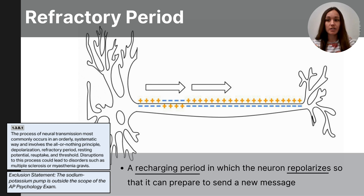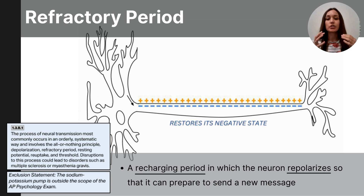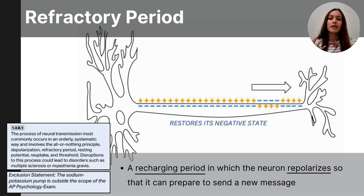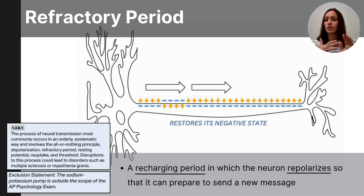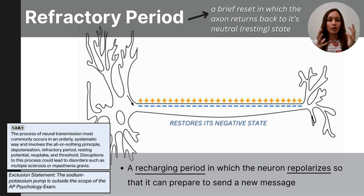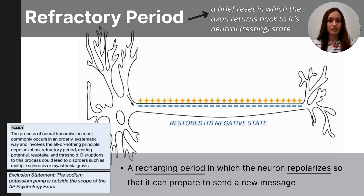To send a new message, the neuron has to repolarize back to its neutral negative state. This happens very quickly — just as quickly as the negative charges rush out, they rush back in to reset the neuron. This recharging period is called the refractory period, and once it is complete and the neuron is back to its neutral resting state, we say it is back at the resting period.